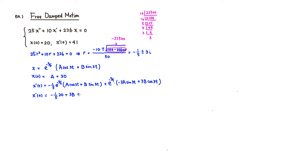So negative 20 over 5 is negative 4, giving negative 4 plus 3b equal to 41. Adding 4 to both sides: 3b equals 45. Dividing by 3, b is equal to 15.